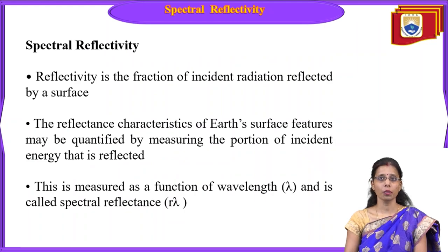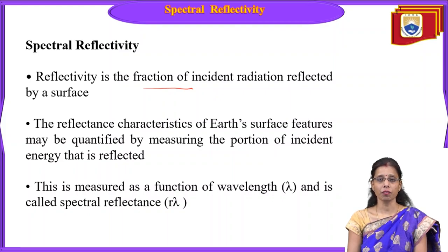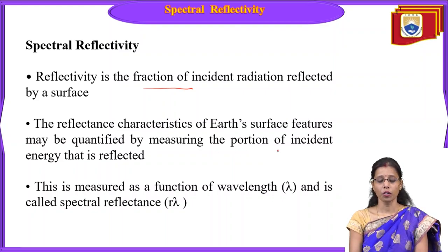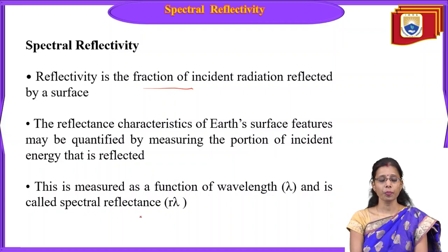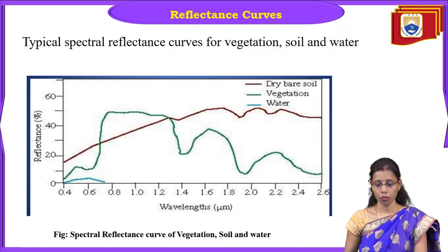Spectral reflectivity is a fraction of incident radiation reflected by a surface. The reflectance characteristics of an earth surface feature may be quantified by measuring the portion of incident energy that is reflected. This measurement is a function of wavelength and is called spectral reflectance — describing how energy falling on the surface reflects back to the atmosphere and is captured by the sensor.